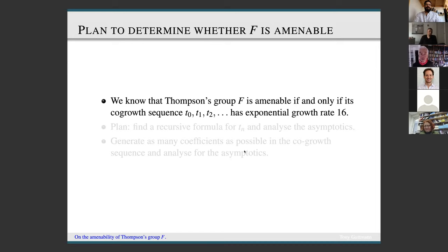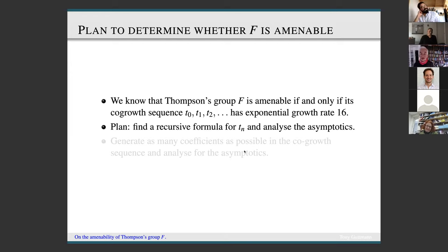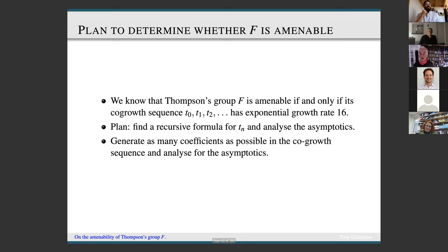Our plan to determine whether F is amenable — though we're not claiming to prove this — is based on the fact that Thompson's group is amenable if and only if its co-growth sequence has exponential growth rate 16. Our plan was initially to try and find a recursive formula for the co-growth sequence and analyze the asymptotics. Unfortunately this was unsuccessful, so we fell back on generating as many coefficients as possible and using a variety of well-established techniques to determine the co-growth behavior.